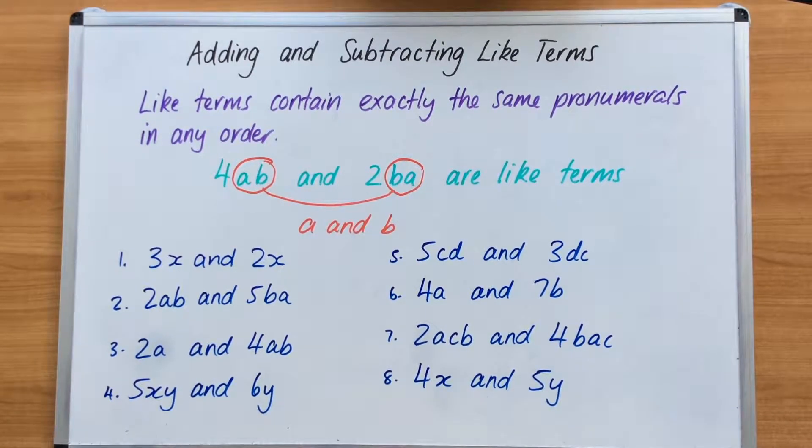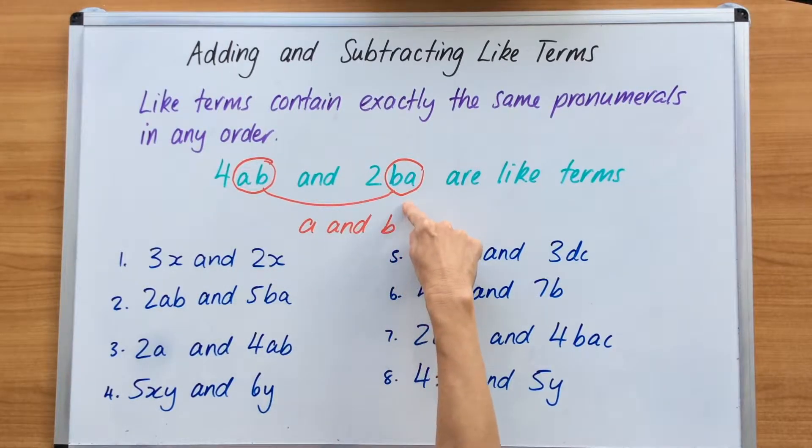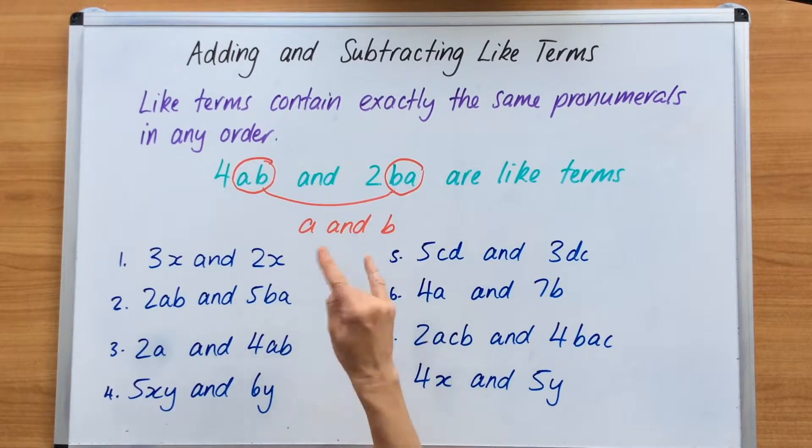In this video we are focusing on adding and subtracting like terms. Like terms contain exactly the same pronumerals in any order. For this example here we've got 4AB and 2BA. They are like terms because they have an A and a B in each term. It doesn't matter what order they're in.